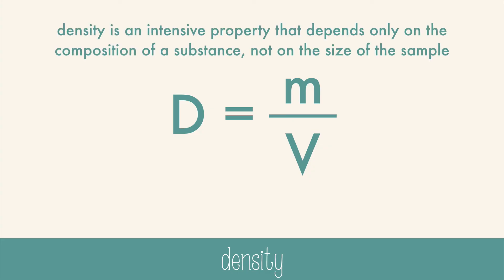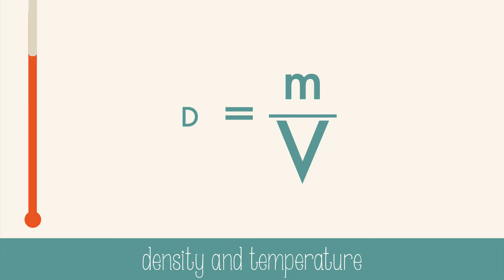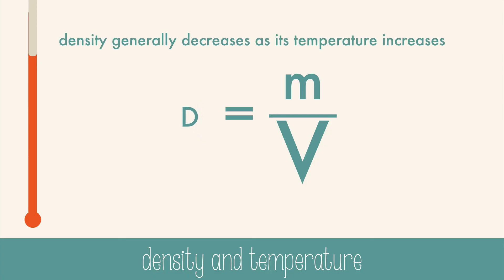So you could have a small gold coin or a large heavy gold bar — both the coin and the bar have the same density: 19.3 grams per cubic centimeter. Now, as temperature rises, volume increases, which makes the overall density decrease. Generally, density decreases as temperature increases, with a few exceptions to the rule. The most important exception is water, but we'll talk more about that another time.